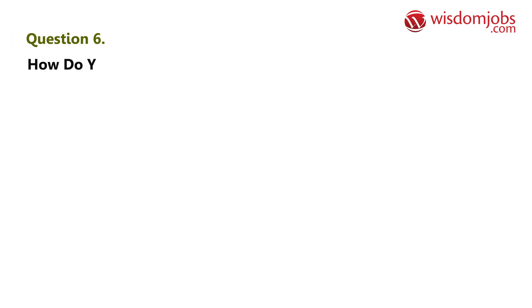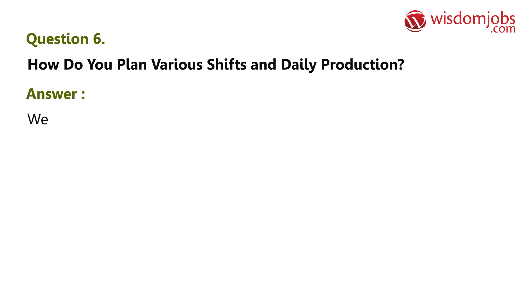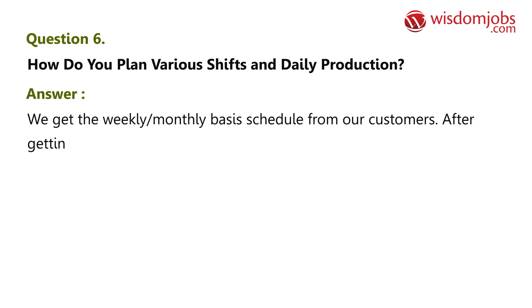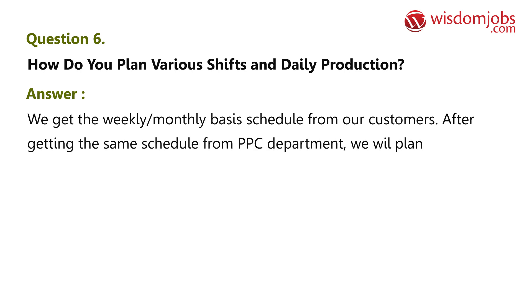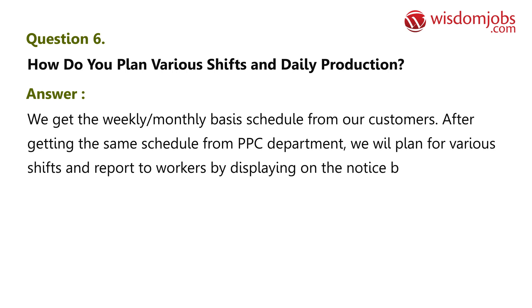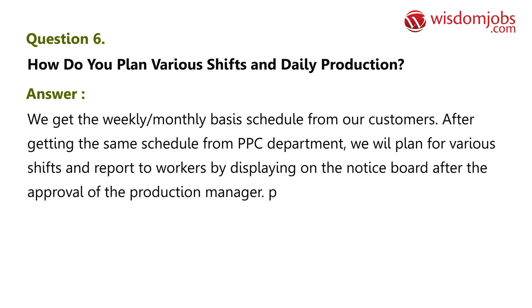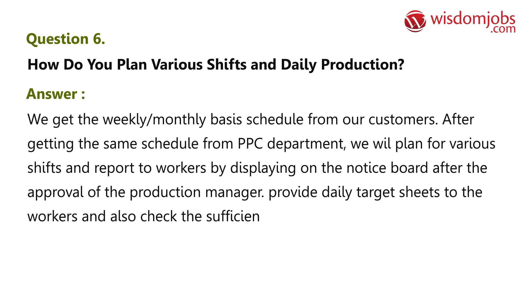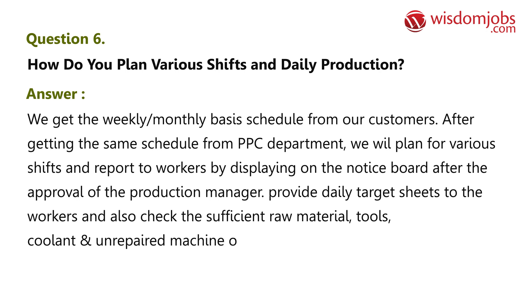Question 6: How do you plan various shifts and daily production? We get the weekly and monthly basis schedule from our customers. After getting the same schedule from the PPC department, we plan for various shifts and report to workers by displaying on the notice board after the approval of the production manager. We provide daily target sheets to the workers and also check for sufficient raw material, tools, coolant, and unrepaired machines on the workshop floor.